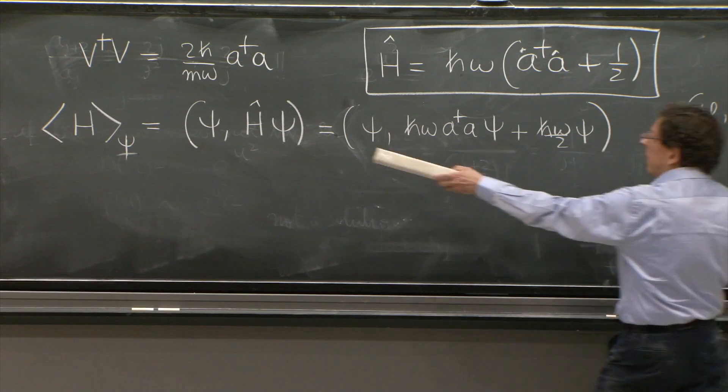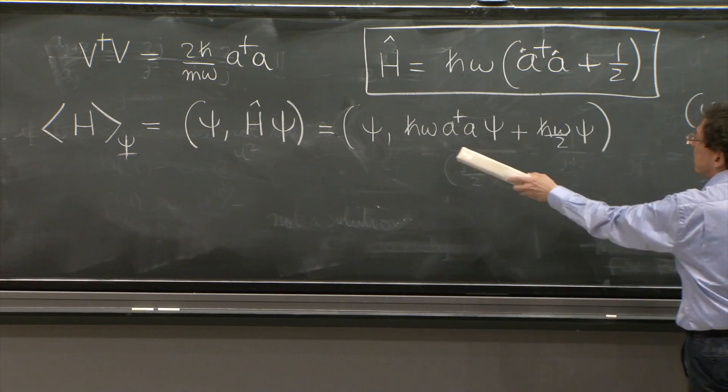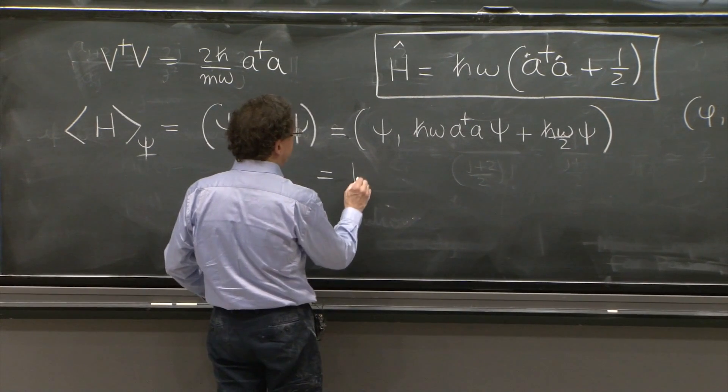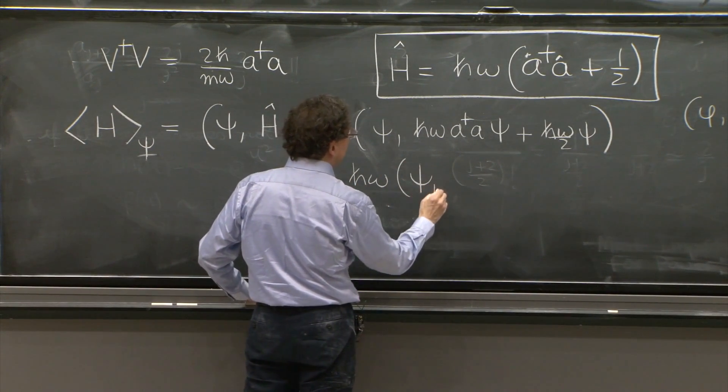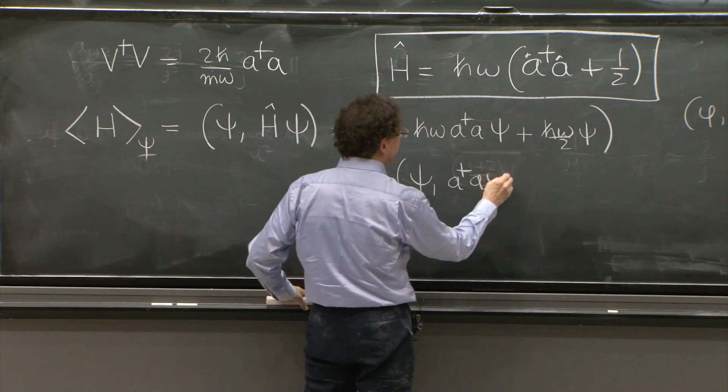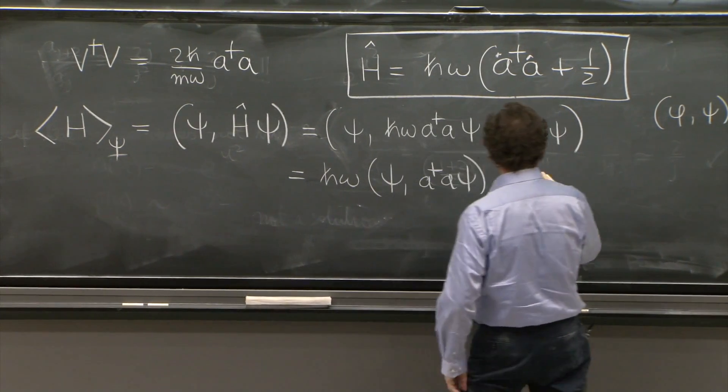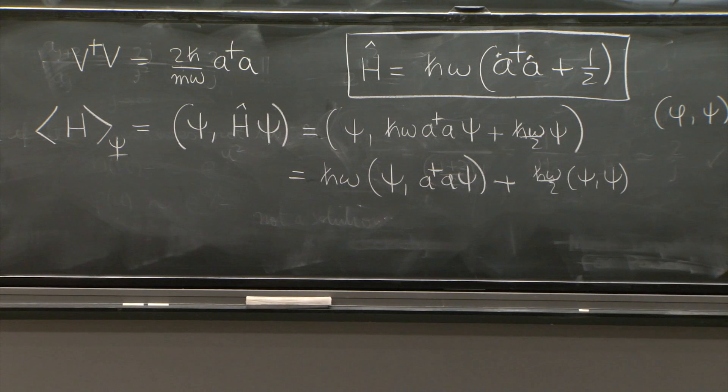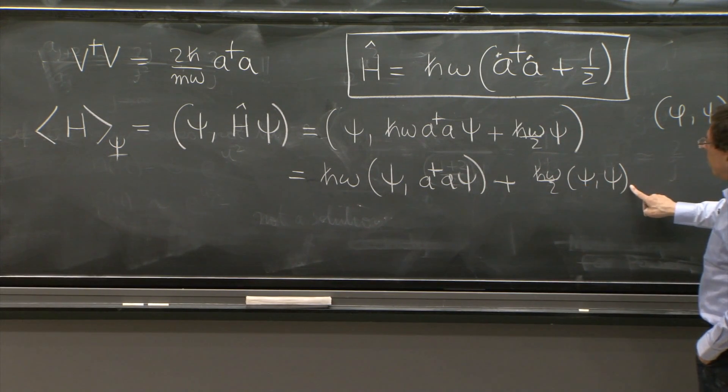So I just calculated H on psi and wrote what it is. H omega of this, this term. So this is two terms. This is the first, H omega a dagger a psi, plus h omega over 2 psi psi. So what did I gain with the factorization? So far, it looks like nothing. But here we go. This term is equal to 1 because the wave function is normalized. And here, I can do one thing.